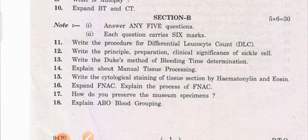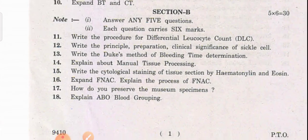Section B questions: Write the procedure for the differential leukocyte count. Write the principle, preparation, and clinical significance of sickle cell. Write the Duke's method of bleeding time determination. Explain about manual tissue processing. Write the cytological staining of tissue section by hematoxylin and eosin. Explain the process of fine needle aspiration cytology. How do you preserve the museum specimen? Explain ABO blood grouping.